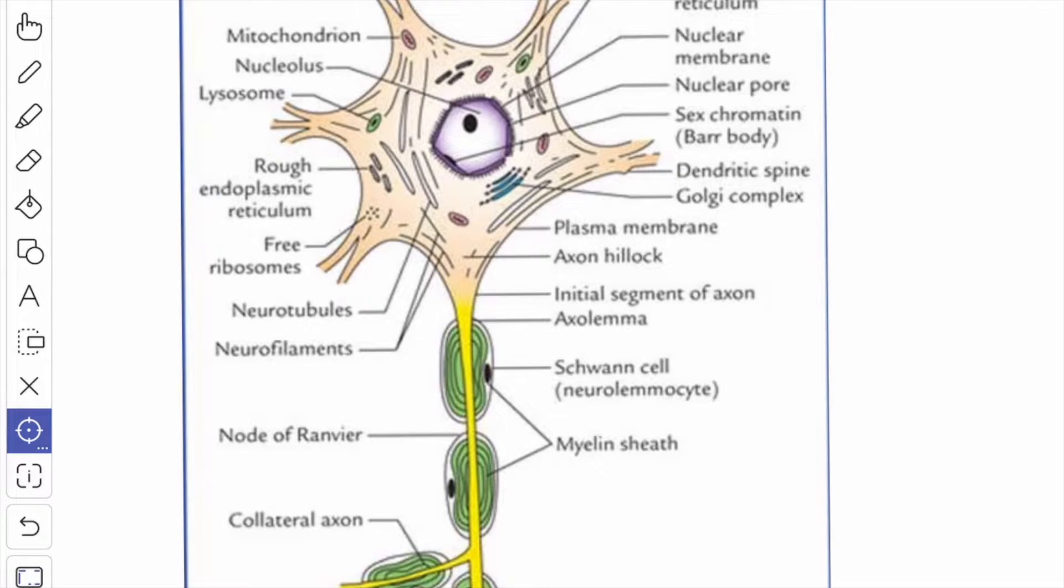The mitochondria are numerous double membrane rod-like structures which are present in the entire cytoplasm and they all extend into all the processes.